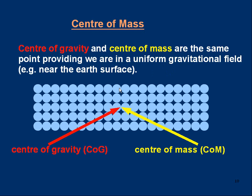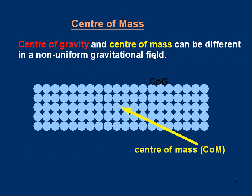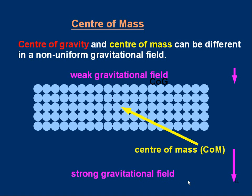You can get situations where center of gravity and center of mass are not the same, for example in a non-uniform gravitational field. Suppose you've got a weak gravitational field at the top of the object. The atoms on the top row will not weigh very much because they're in a weak gravitational field, but the atoms on the bottom row will weigh rather more. So most of the weight is in the lower half, meaning the center of gravity will be below the center of mass. You won't have to deal with that in problems, but it's important to know the difference between center of gravity and center of mass.